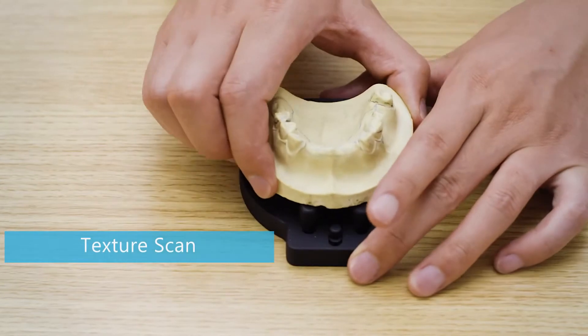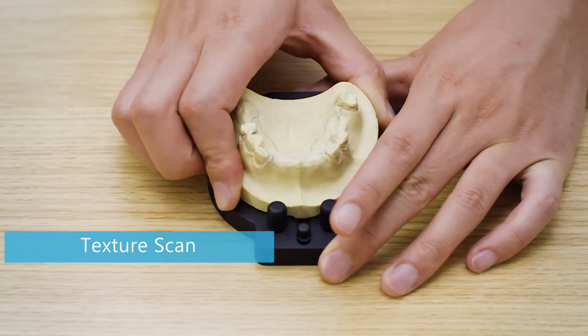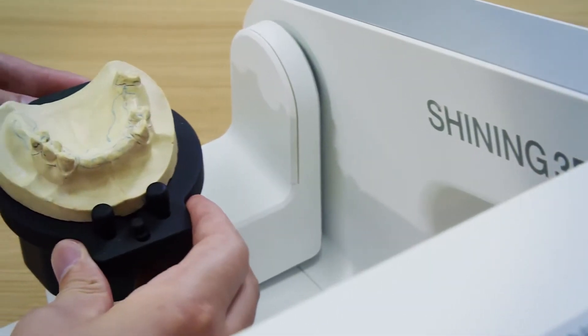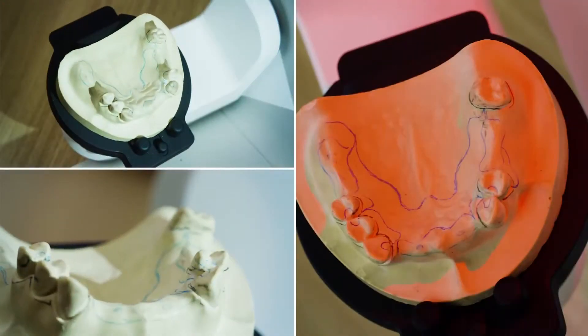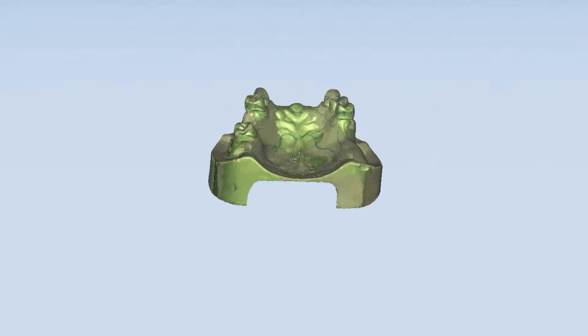Texture Scan is also available with Autoscan DS-EX. With the optimized scan path, hand-drawn marks on the model can be clearly and fully acquired.